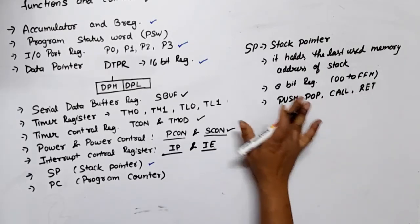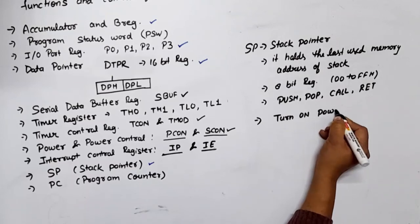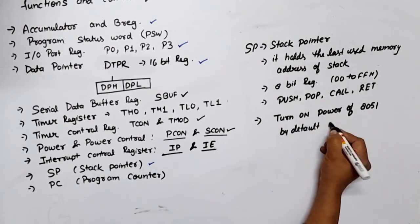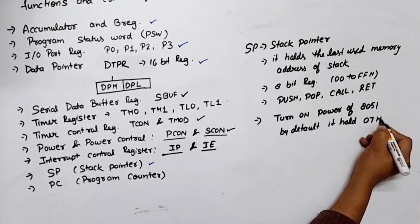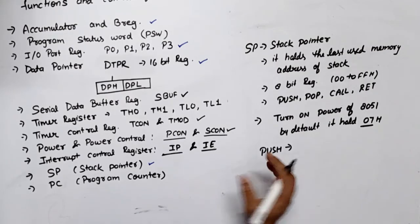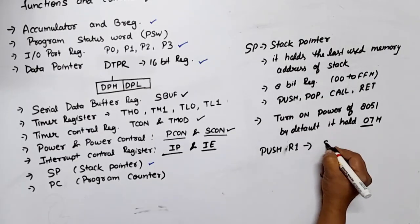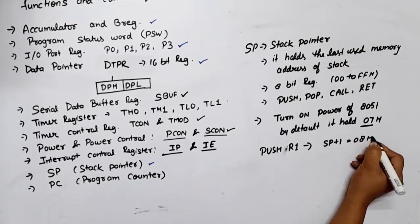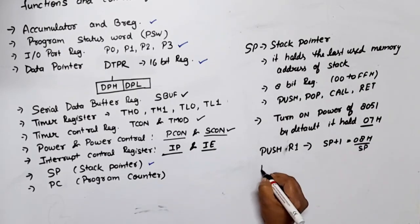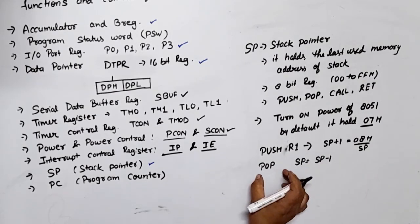When power is turned on for the 8051, by default the stack pointer holds 07h. When PUSH is used — for example, PUSH R1 — the content of R1 will be stored at SP+1, which is 08h. The new SP then points to 08h. In case of POP, SP will be SP minus 1, because POP is used for retrieving data from the stack.